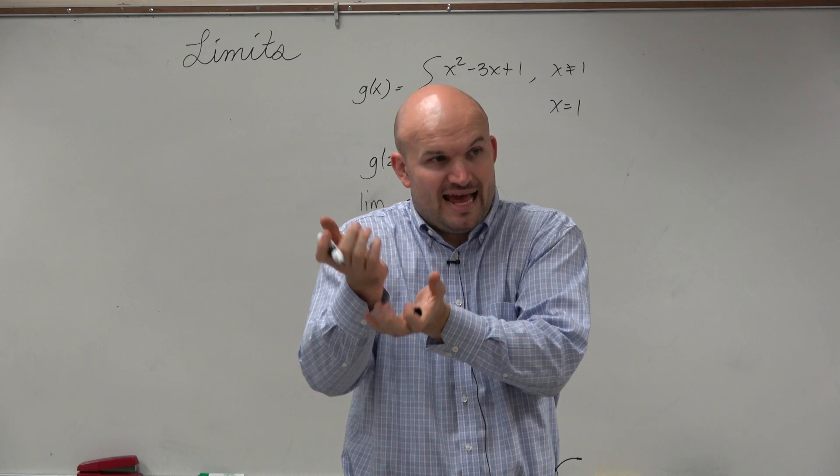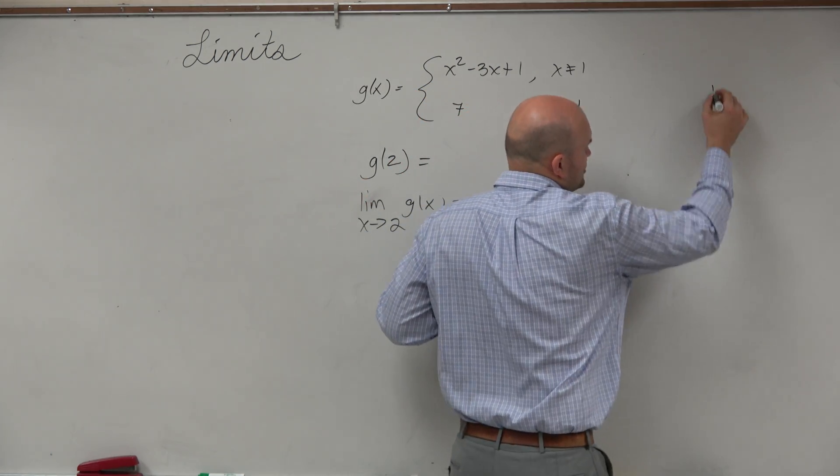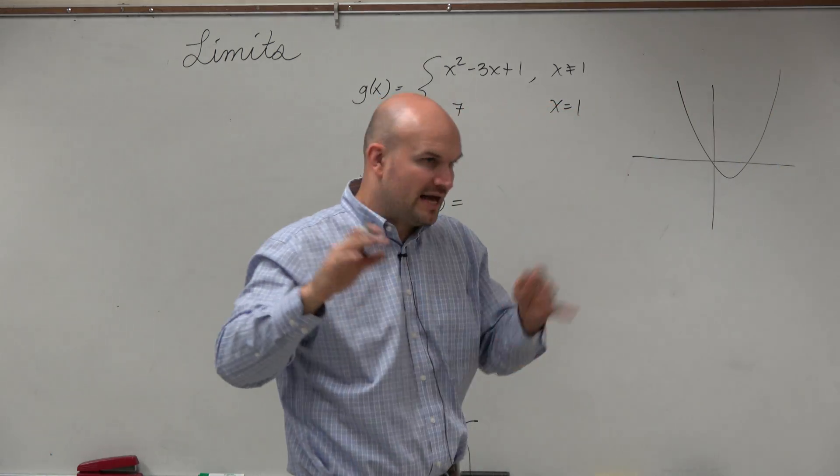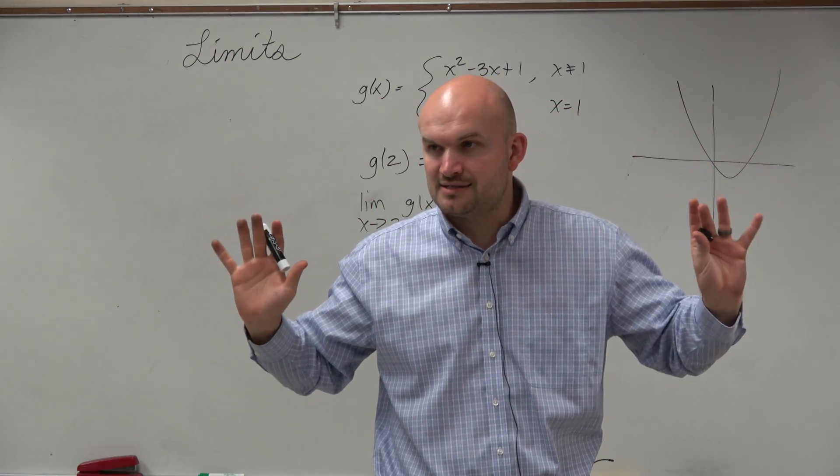...and we know that the a is positive. So this graph looks something like this. I mean, who knows? It could be up, whatever, down, like left, right. It looks something like that, correct?